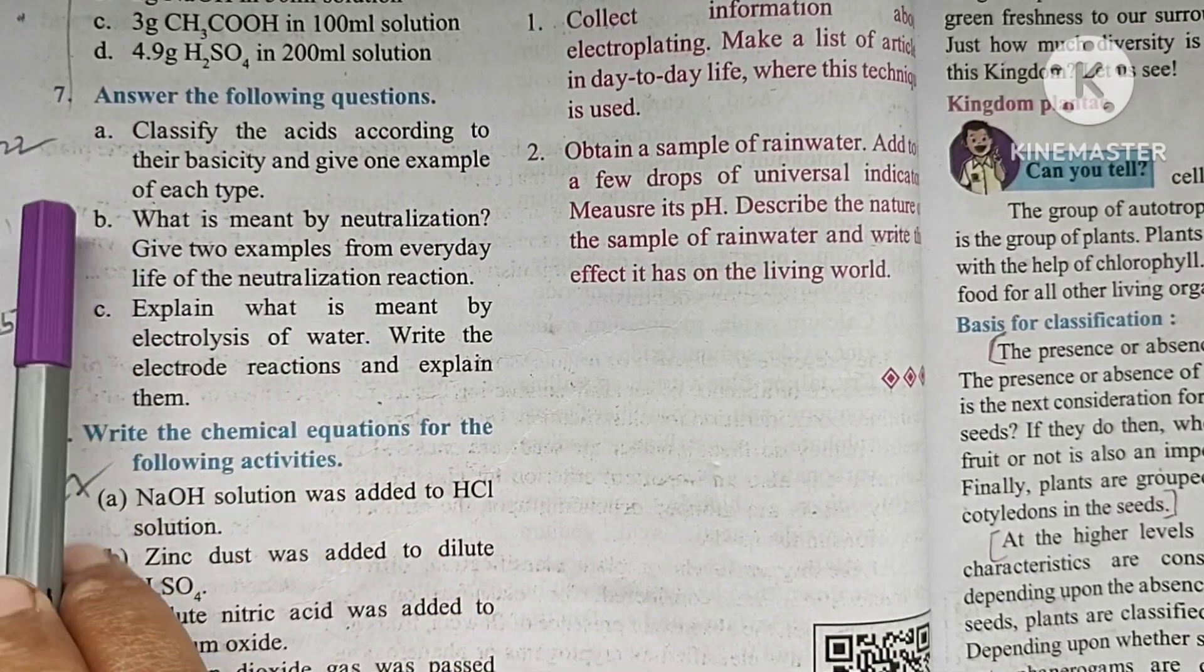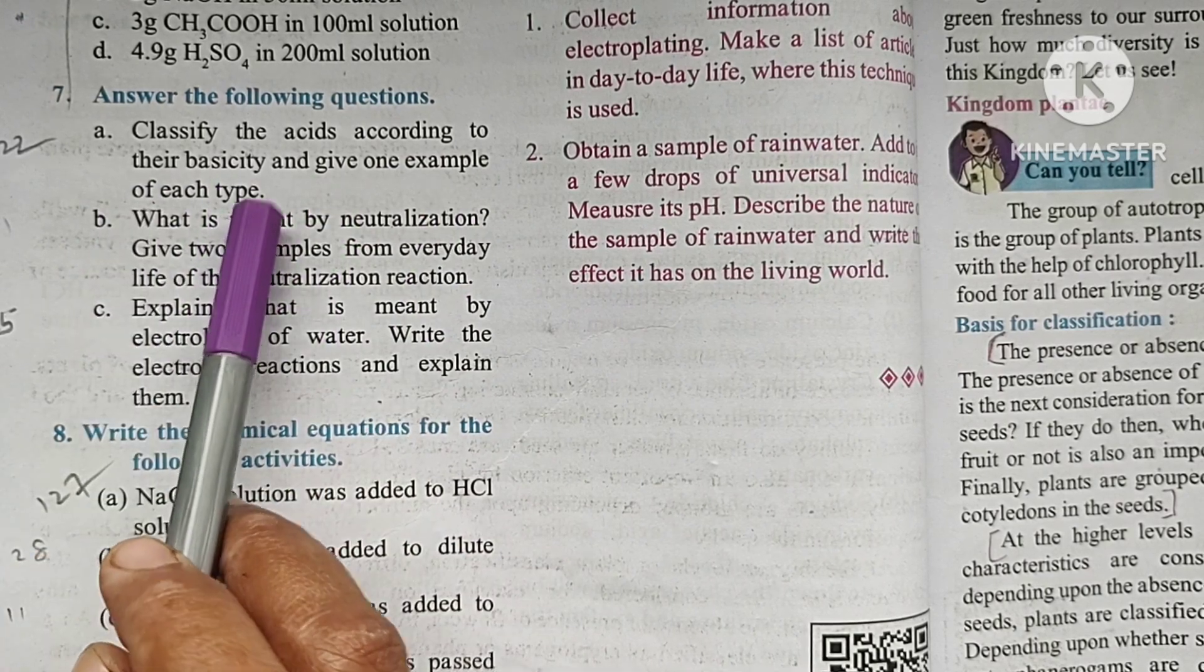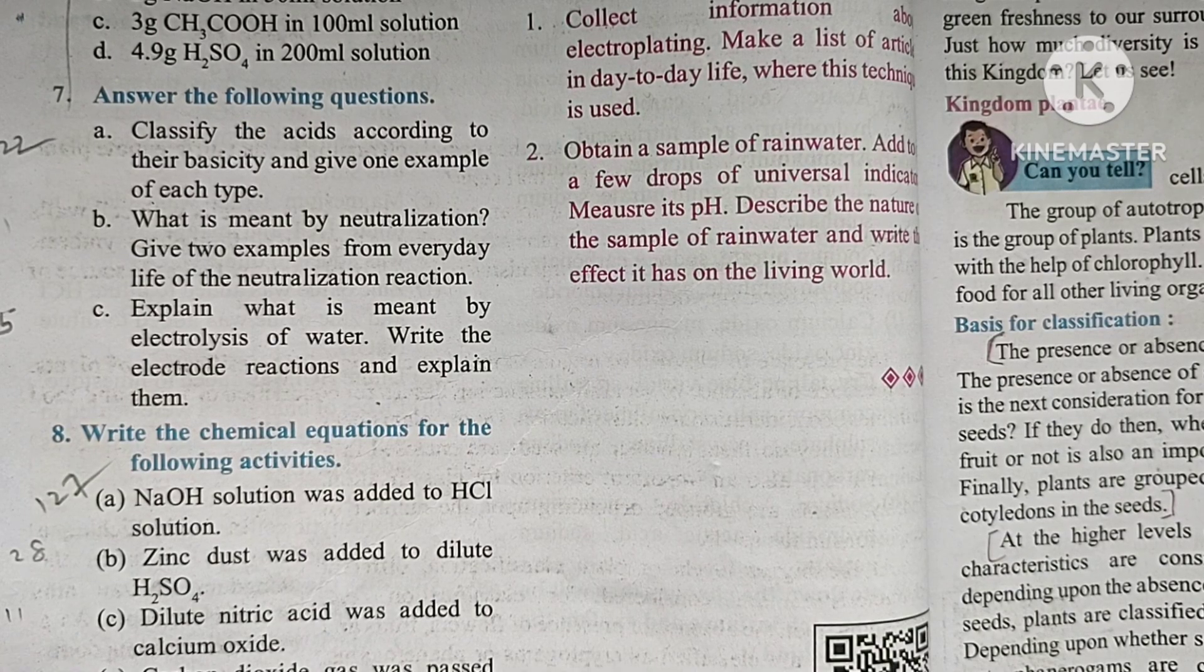Question No. 7: Answer the following question. Part A: Classify the acids according to the basicity and give one example of each type. Answer is your answer.